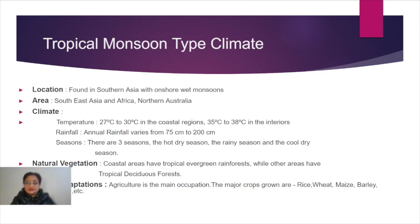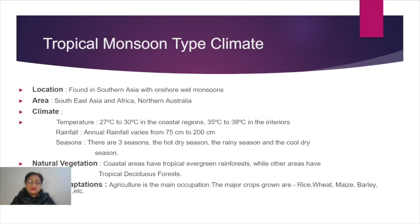The rainy season lasts till the end of September, after which comes the reversal or retreating of monsoons in October and November. October is still too hot because the impact of summer is still there and moisture is high in the atmosphere from recent rainfall. This creates a typical condition called 'October heat,' related to monsoon conditions.